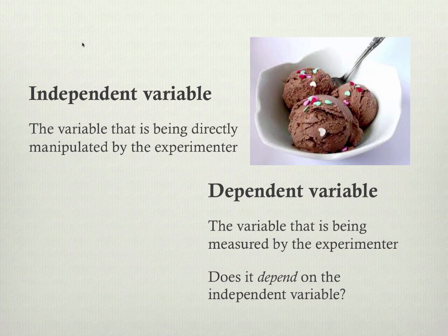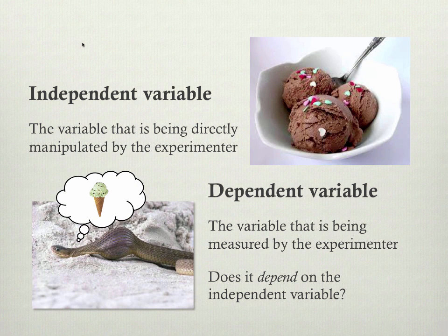So the dependent variable in our example would be number of snake bites. In other words, does getting bitten by a snake depend on whether you've eaten ice cream? It's just another way of asking: does eating ice cream cause you to get bitten by a snake? But for some reason we choose to flip it around in the terminology.